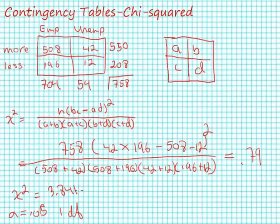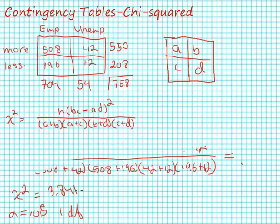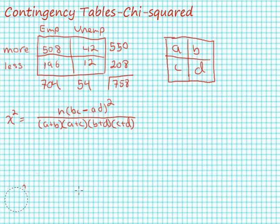We can also calculate a measure of association for these two variables, and that measure for a two-by-two table is called Yule's Q. The formula for Yule's Q is the following: